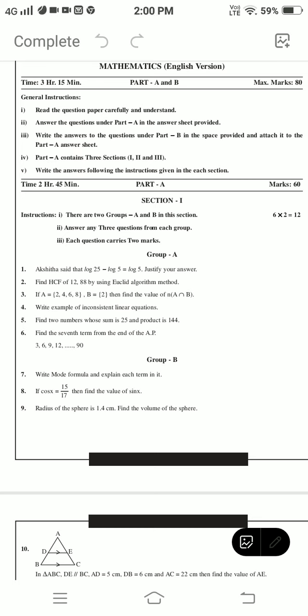Group A: Akshita said that log 25 minus log 5 equals log 5. Justify your answer. Find HCF of 12, 88 by using Euclid's algorithm. If A equals {2,4,6,8}, B equals {}, then find the value of number of intersections of B. Write example of inconsistent linear equation. Find two numbers whose sum is 25 and product is 144. Find the seventh term from the end of the AP: 3, 6, 9, 12... 90.